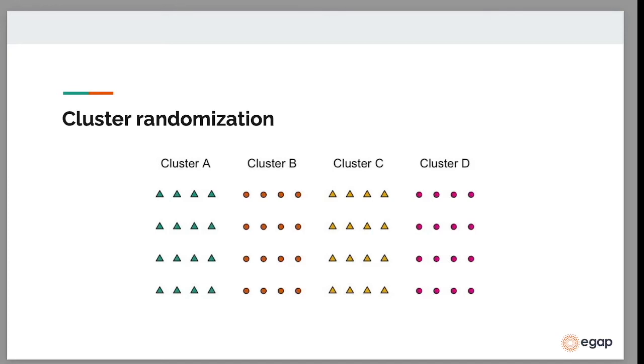We lose statistical power by doing cluster randomization. So it's not great, but sometimes it's unavoidable. For example, the treatment might be at the school level, and we're measuring outcomes at the individual, at the level of individual students. And the treatment can only be assigned at the school level.